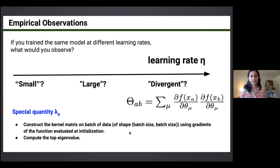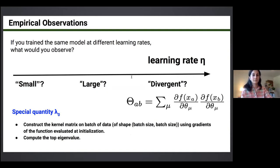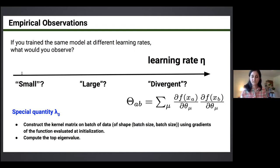The question is: if you trained a model at different learning rates, what phenomena would you observe? If the learning rate is too large, training will diverge — gradient descent steps don't match the curvature and geometry of the loss landscape. But can we draw a meaningful distinction between 'small' and 'large' learning rates? It turns out we can, and it's related to the theory of infinitely wide networks.